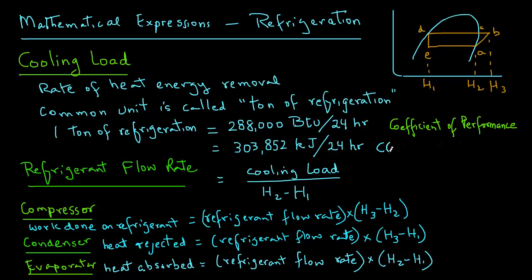COP equals H2 minus H1 divided by H3 minus H2. Note that H2 minus H1 is the section that represents how much heat is absorbed by the refrigerant. H3 minus H2 represents the amount of work done by the compressor on the refrigerant.